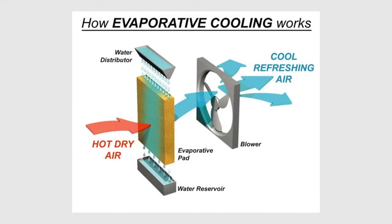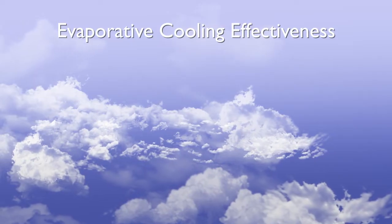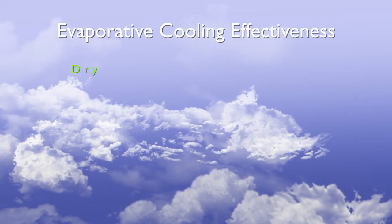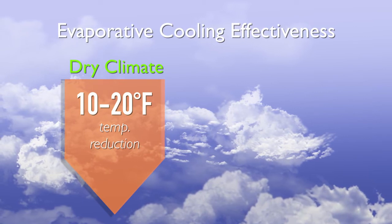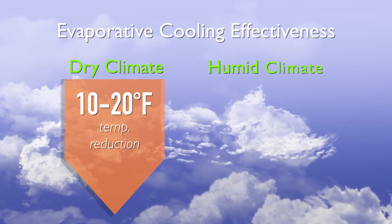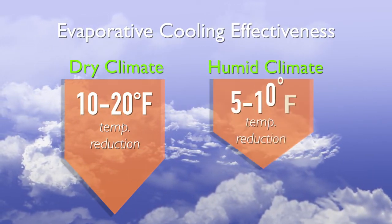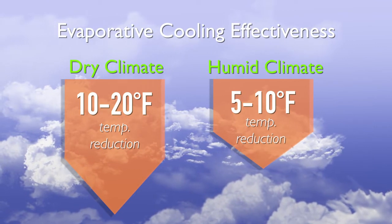This diagram shows how an evaporative cooling pad system works. A fan draws hot, dry air through a water-soaked pad. As the air flows through the moist pad, the water evaporates, taking heat out of the incoming air. Evaporative cooling is more effective in drier climates, where it can reduce temperatures by 10 to 20 degrees Fahrenheit. In more humid climates, the temperature drops are closer to 5 to 10 degrees Fahrenheit.